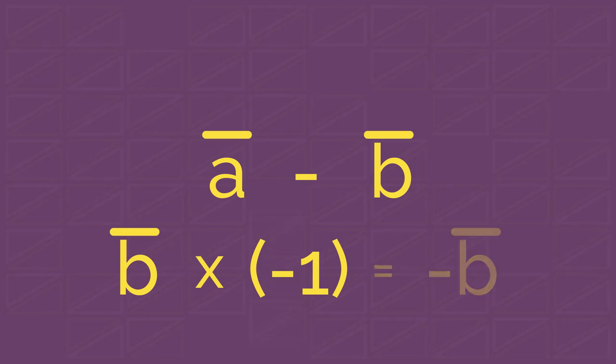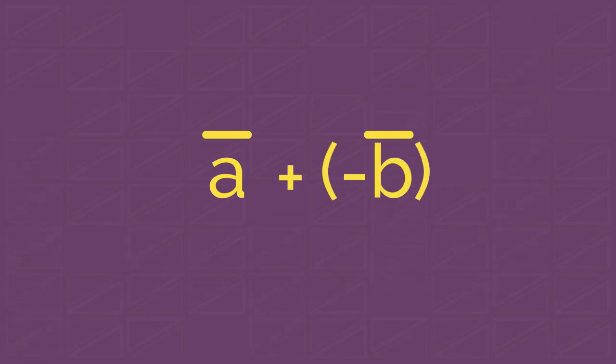To find vector A minus vector B, just multiply vector B by minus 1, which changes its direction to opposite, and add. You already know how to add vectors.